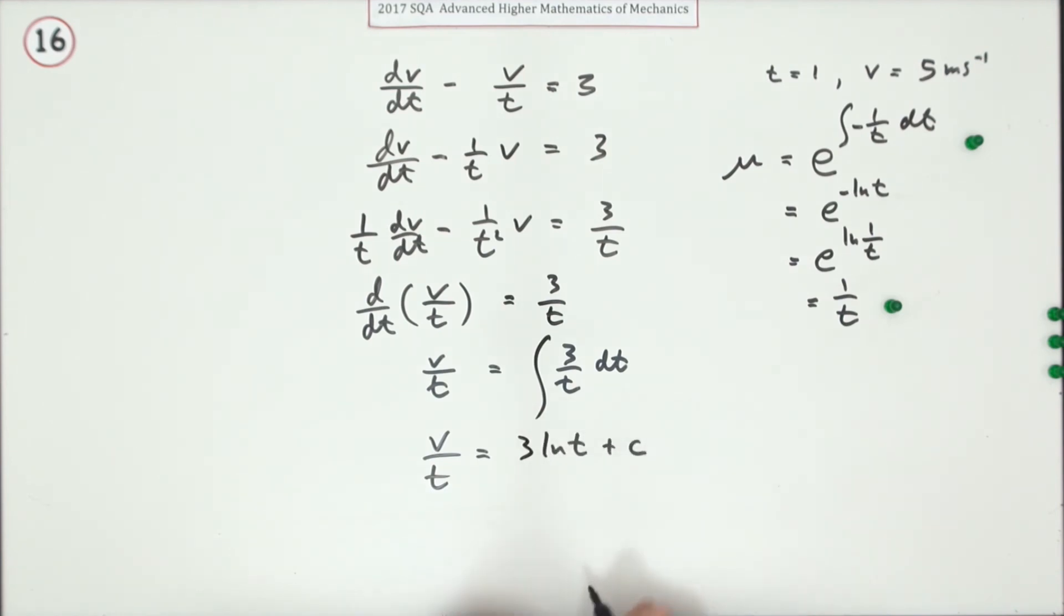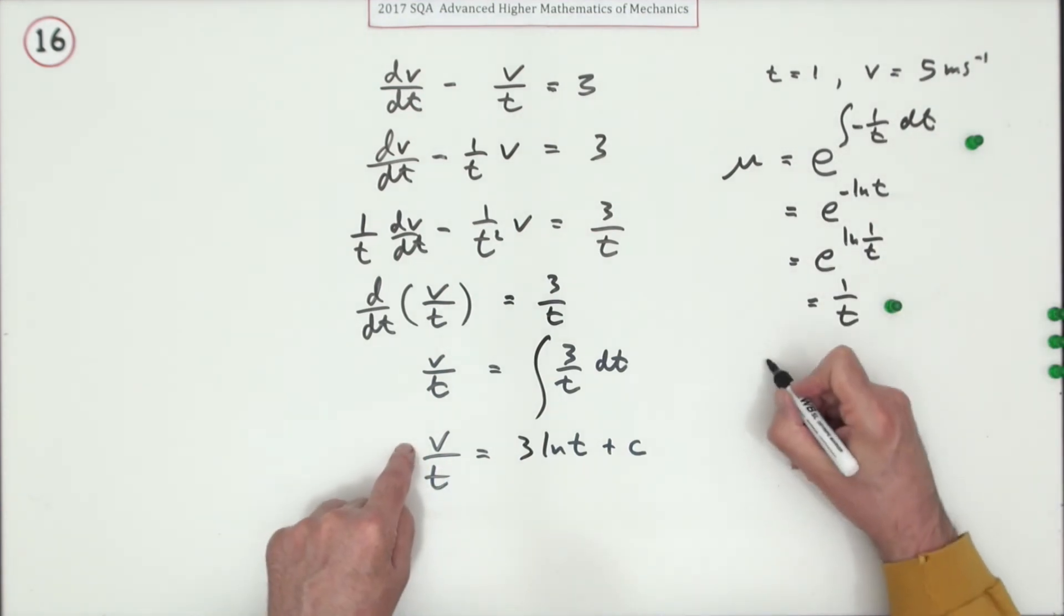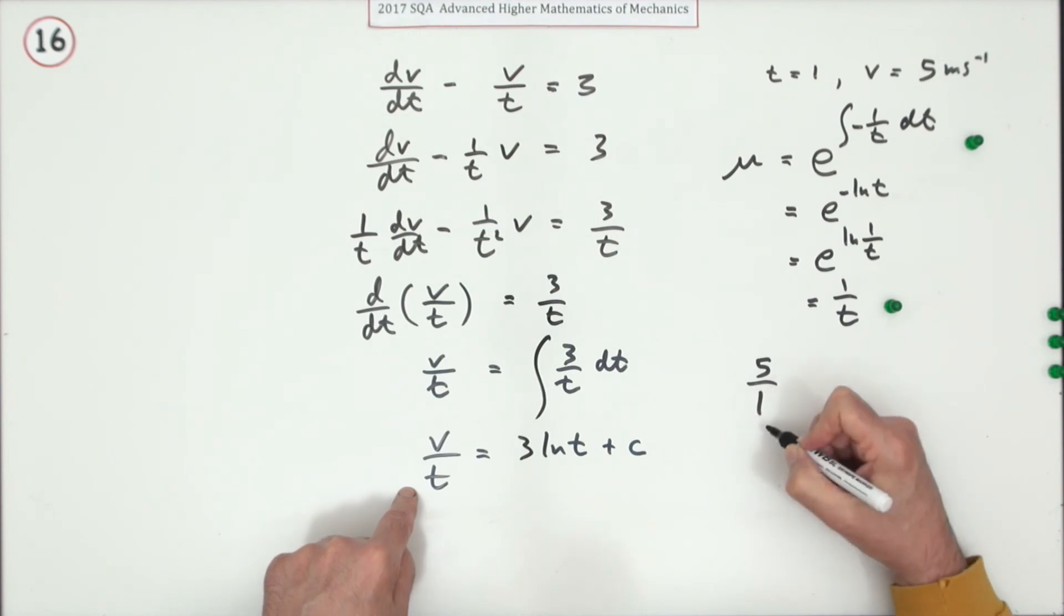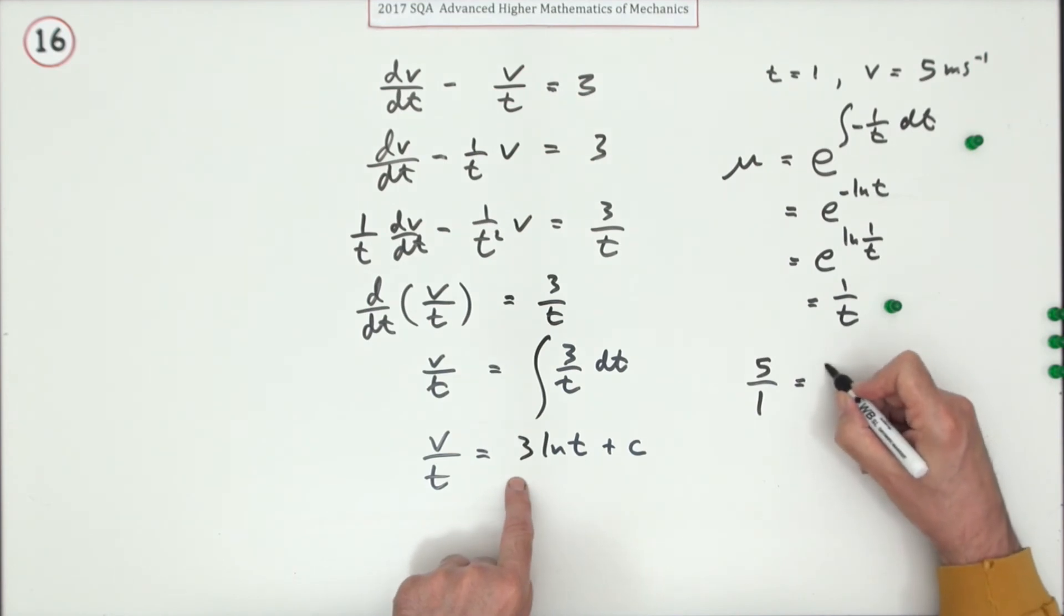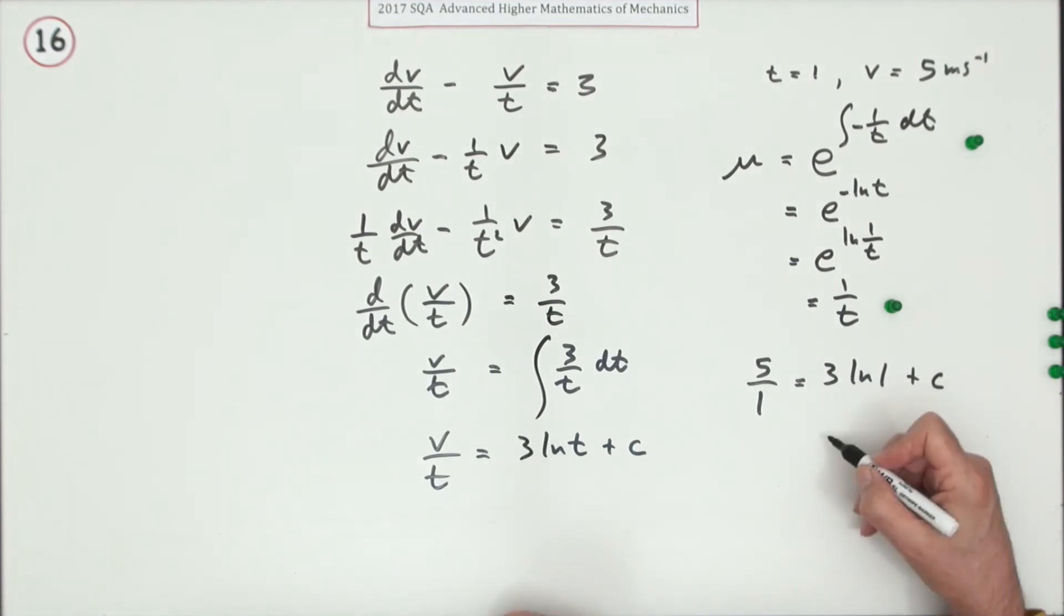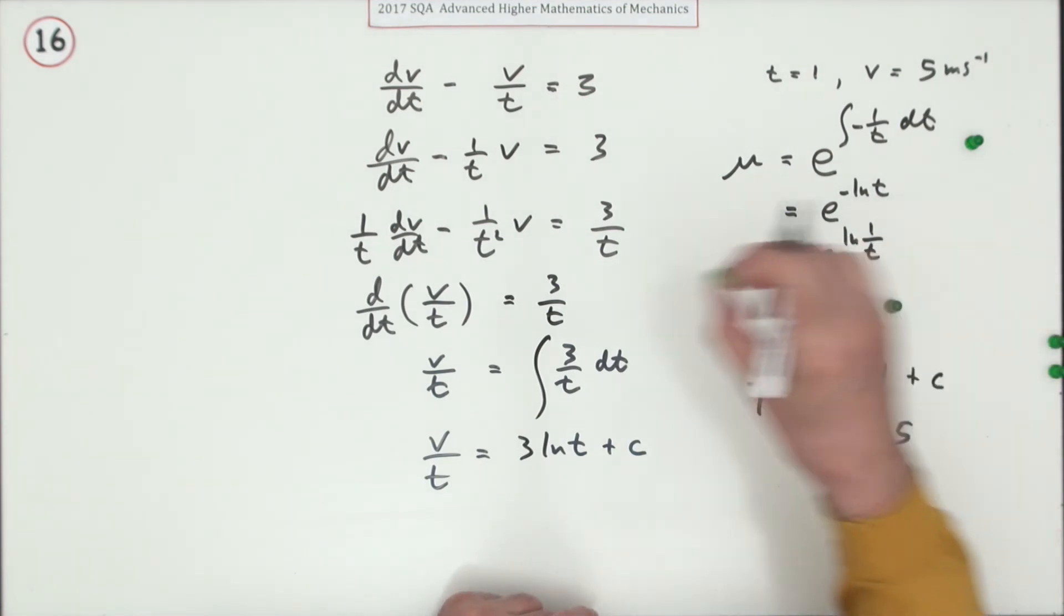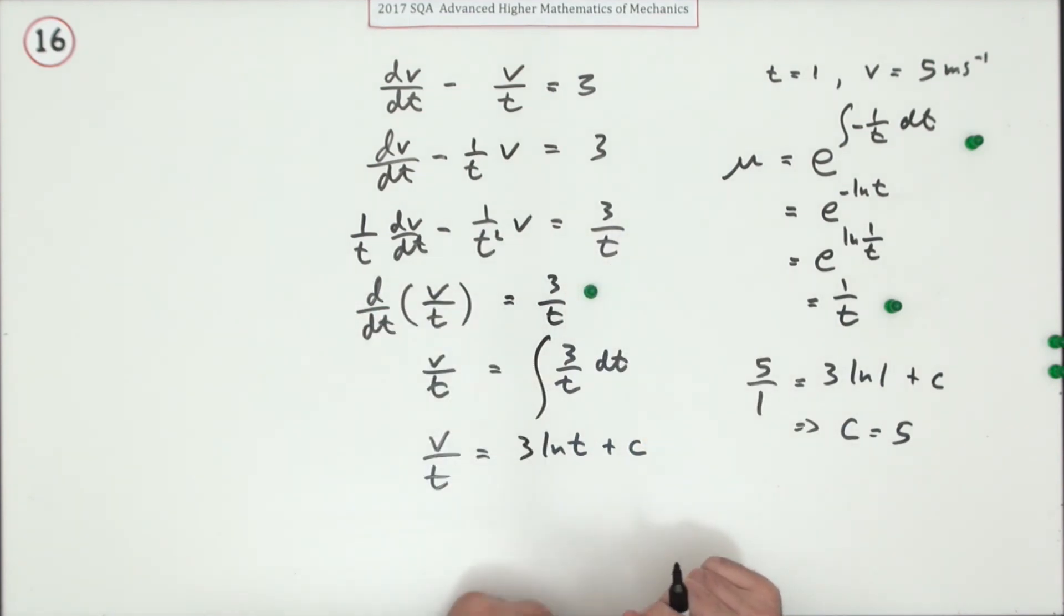Now to find that, I need to use my initial values. So what is this c? Putting those values in: v is 5 when t is 1. It's really not initial values, just a pair of values. Equals 3ln(1) + c. Well, ln(1) is zero by definition—power zero gives the answer one—so c is just 5. I should have said there was a mark of course for doing that, for multiplying by the integrating factor. So you know, you just go back to v/t. Now there was a mark for carrying out the integration.